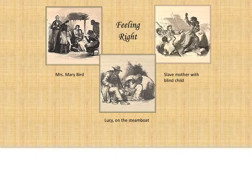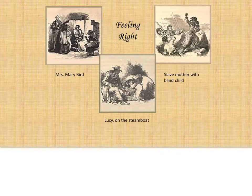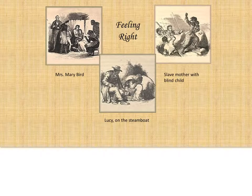This ends part two — item number three, Evangelical Tenets and Belief Systems, as one of the four factors you should know about Uncle Tom's Cabin. Thanks for listening.